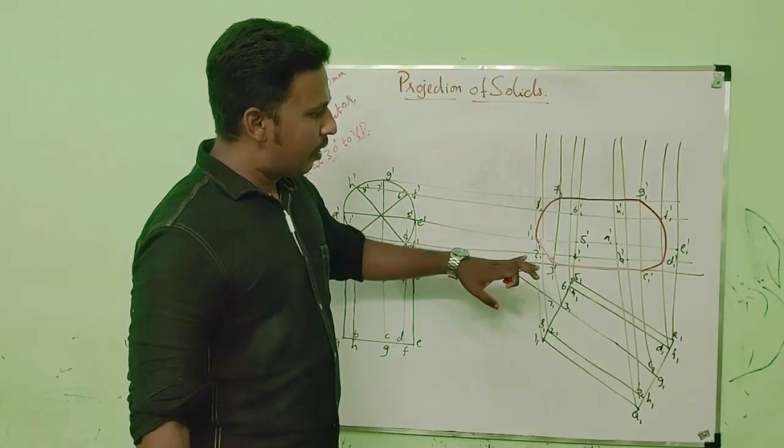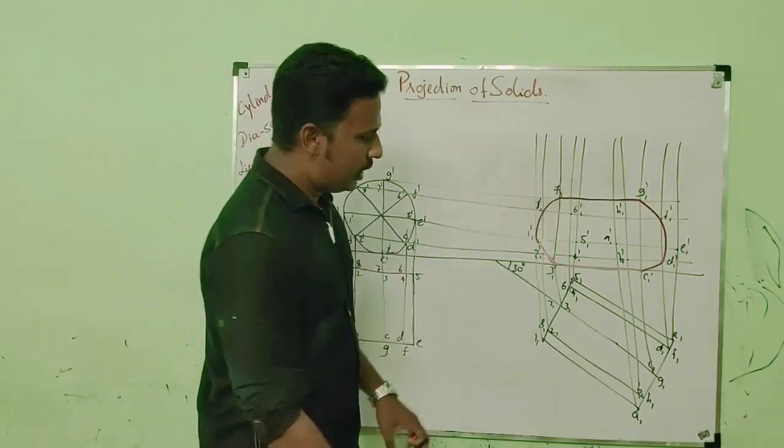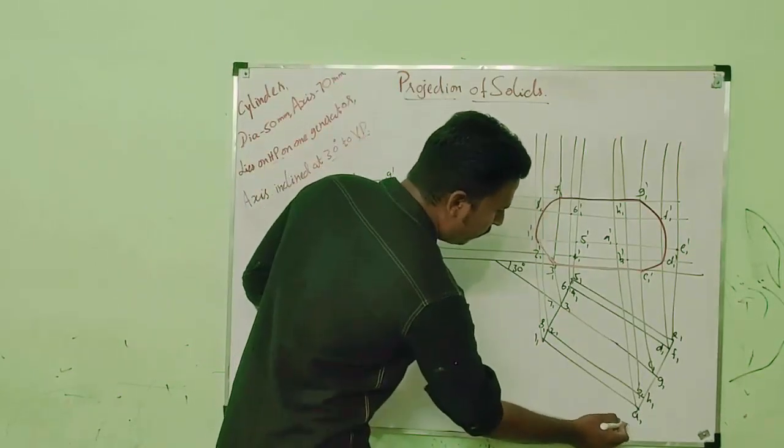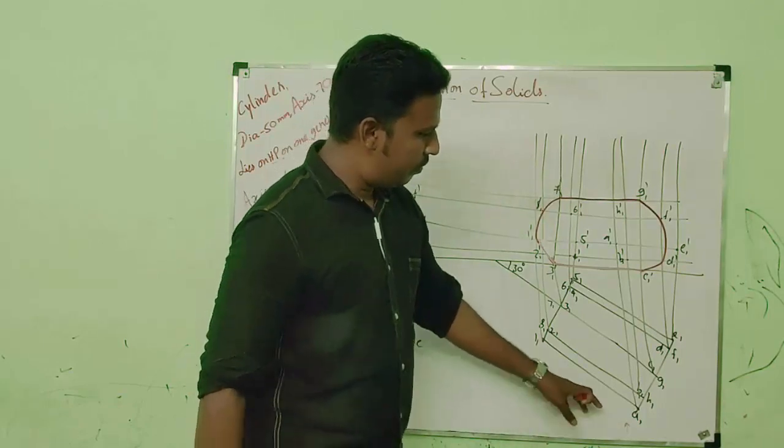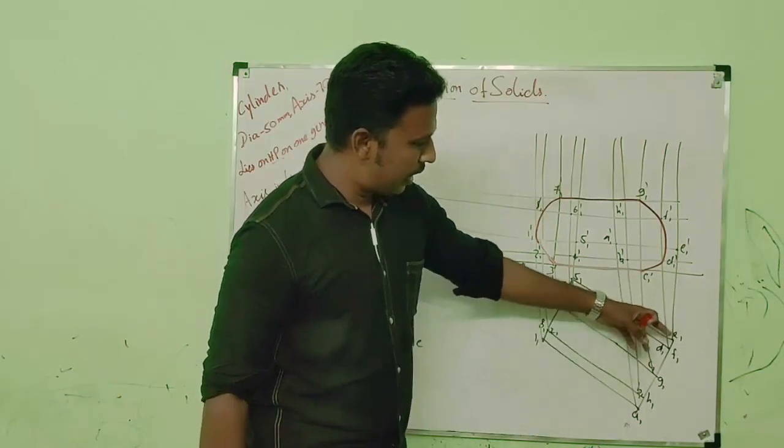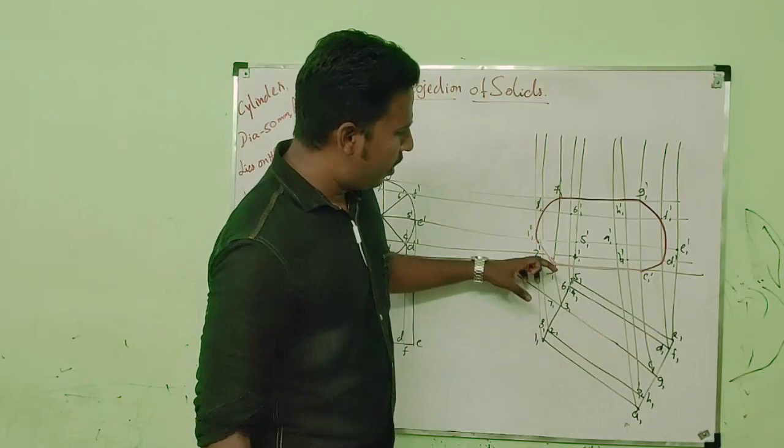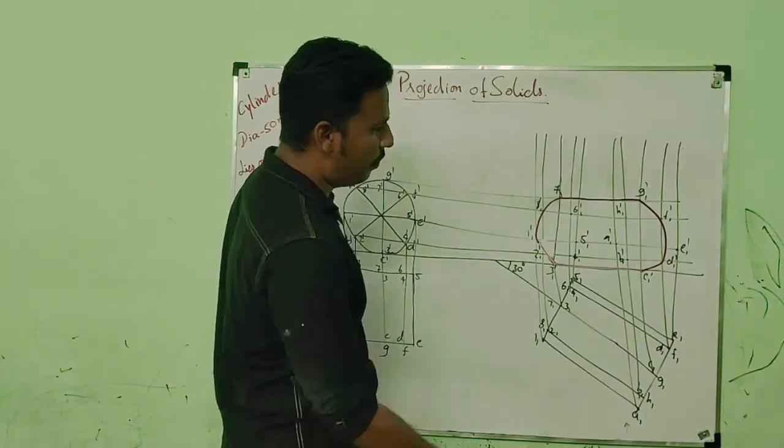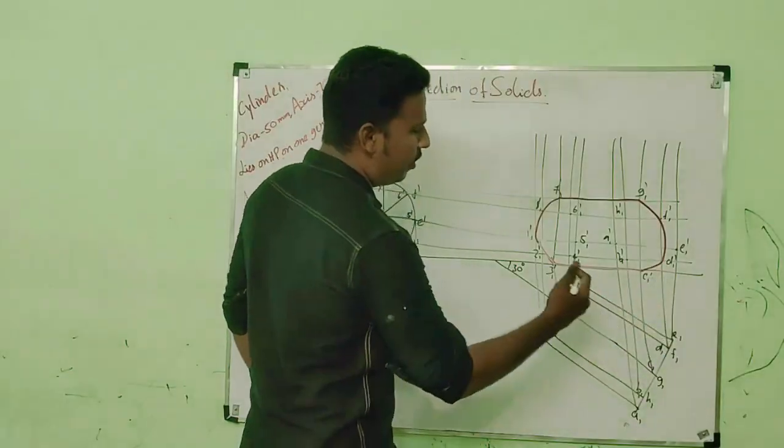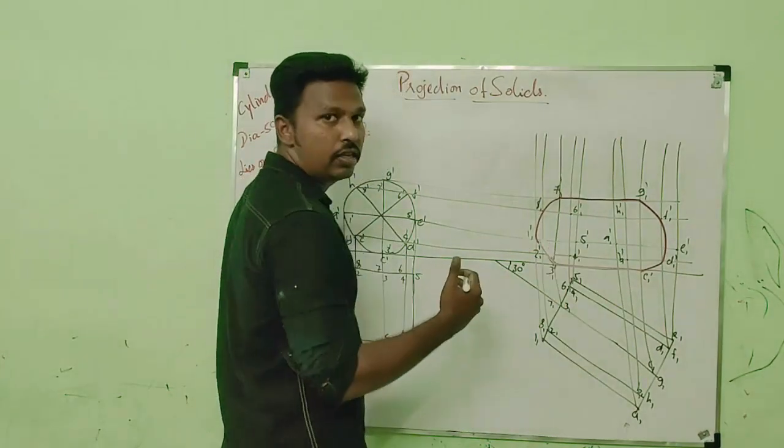Here, this is front view. So we have to see from this orientation. So if you see from this orientation, the face A, B, C, D will be surely visible and the face 1, 2, 3, 4 will not be visible. So the A, B, C, D face should be darkened and 1, 2, 3, 4 face should be drawn in dotted lines.